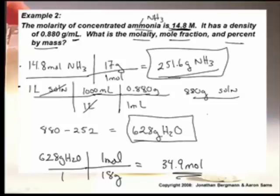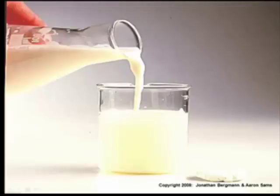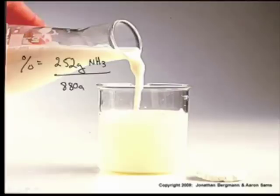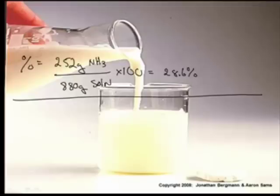So let's do the percents. Because in the percents, it's the amount over the total. So the percent will be 252 grams of the ammonia divided by the total, which was 880, 880 grams of solution times 100 gives me 28.6. 28.6 percent. Percent ammonia. For the percentage of the other one, it would be 100 minus that.